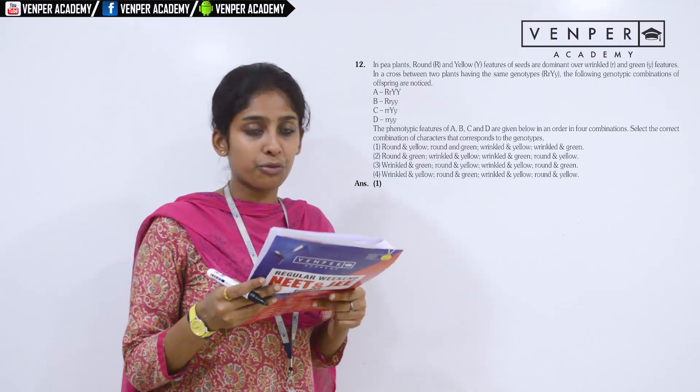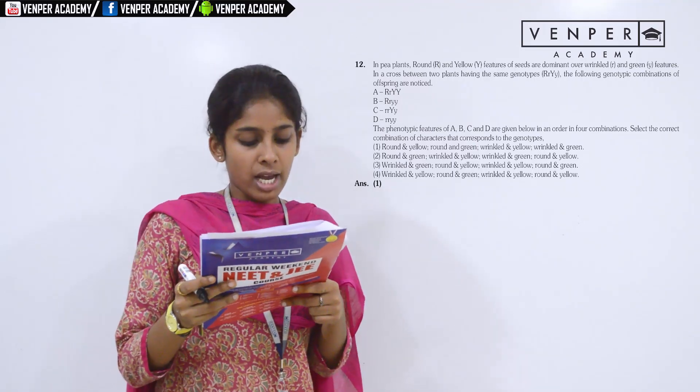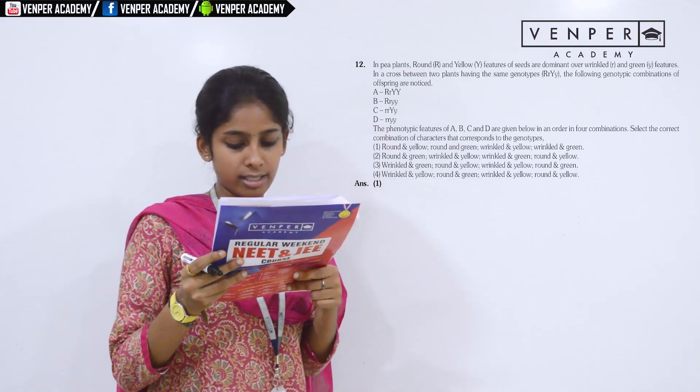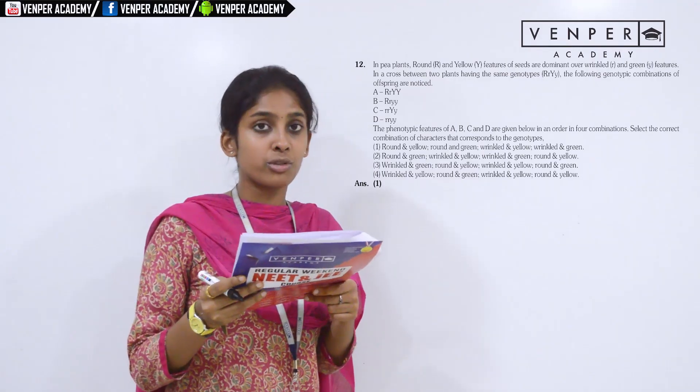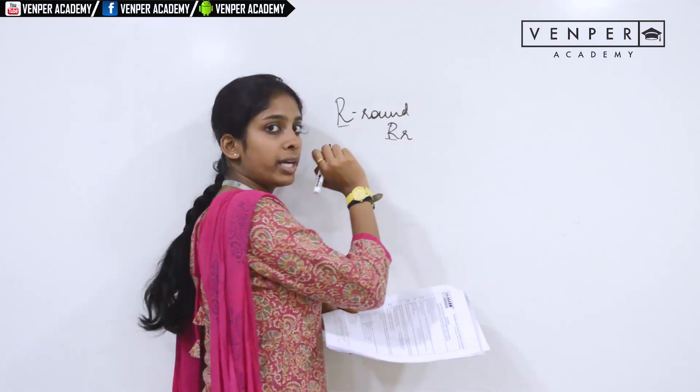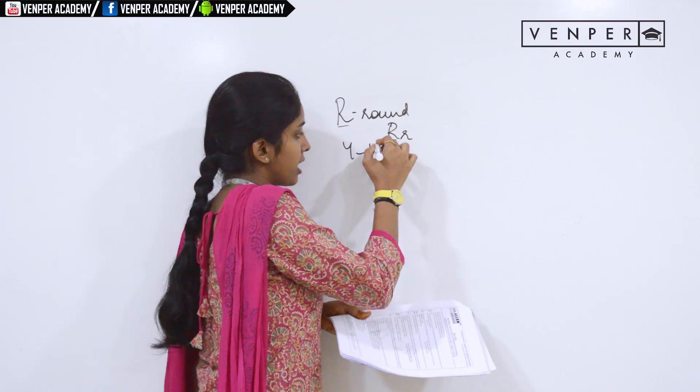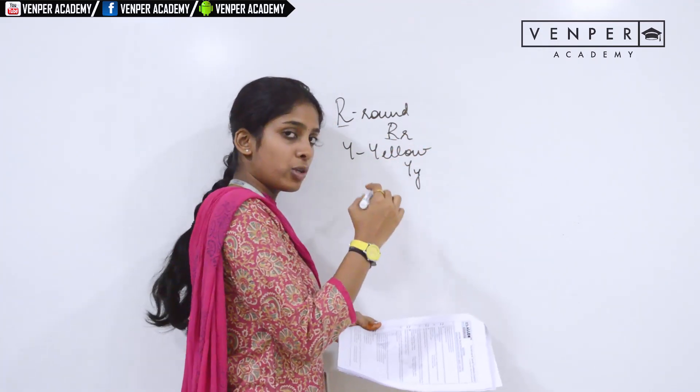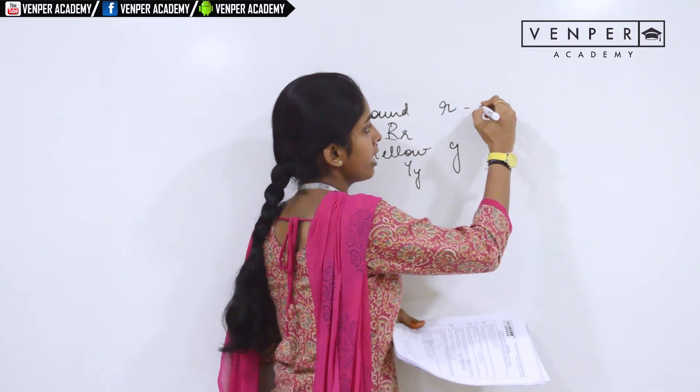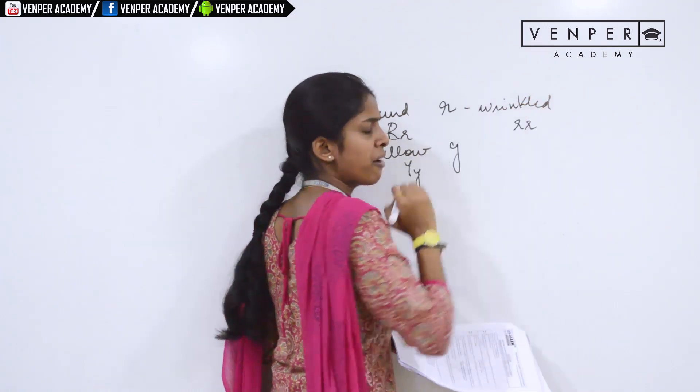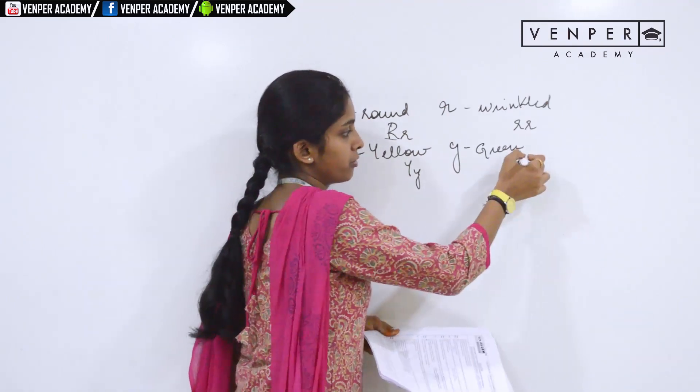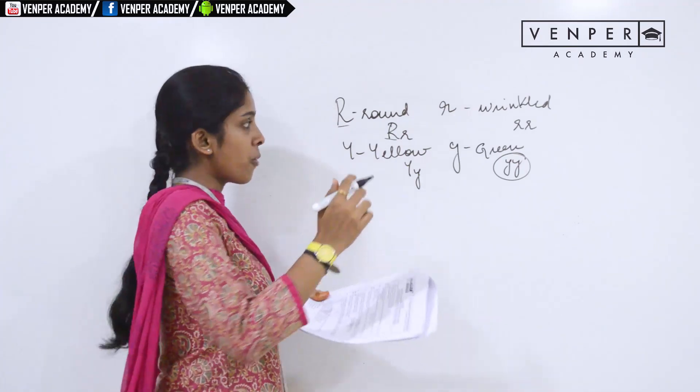Question 12: in pea plants, rounded yellow features of the seed are dominant over wrinkled and green features. In a cross between two plants having the same genotypes, select the correct combination of characters that correspond to the genotypes. R stands for round. When you have capital R, R, this R is dominant, so the phenotype will be round. Y stands for yellow. If you have capital Y, small y, capital Y is dominant. The phenotype will be yellow. You also have small r, small y. This would be wrinkled. When the genotype is yy, the phenotype will be green in color. They have given four combinations A, B, C, D.